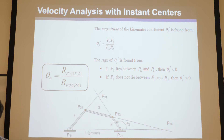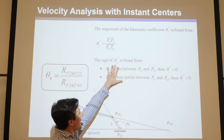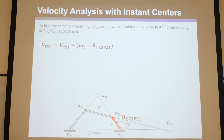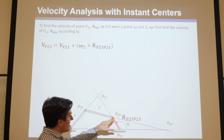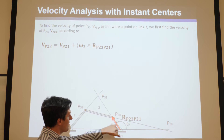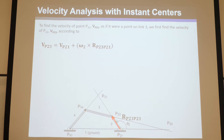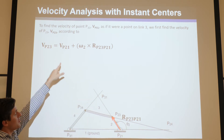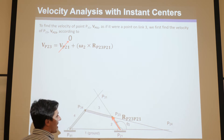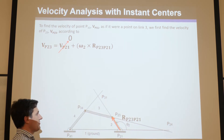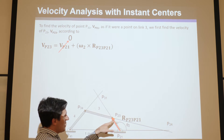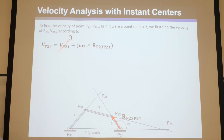In this case it doesn't lie between them, so both links move in the same direction at this instant. Follow this convention to know what to measure, determine the sign, multiply by omega_2, and you have velocity analysis. Let's do another example. We define the vector from p21 to p23, and if we want to find the velocity of point p23, we use the velocity difference equation — starting from p21, which is zero, then omega_2 cross that vector.